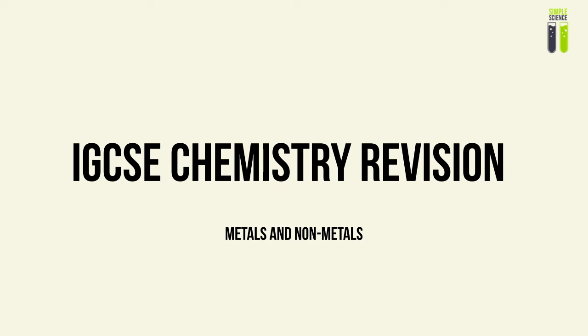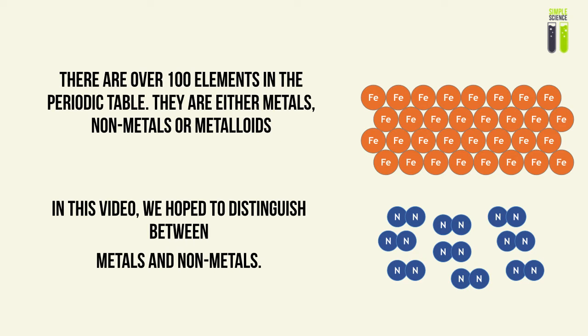Hey everyone and welcome to another simple science video. In this video, we are going to be looking at metals and non-metals. In the periodic table, there are over 100 elements and these can be classified into three groups: metals, non-metals, and metalloids. But in this video, we'll only be focusing on metals and non-metals.